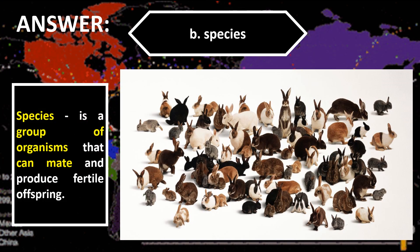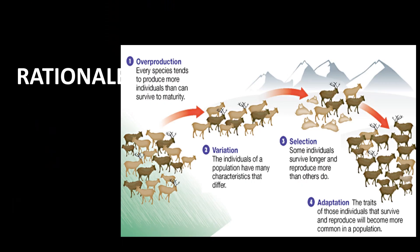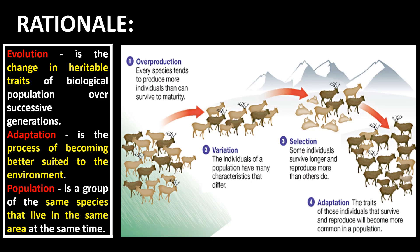The correct answer is letter B, Species. Species is a group of organisms that can mate and produce fertile offspring. Adaptation is the process of becoming better suited to the environment. Population is a group of the same species that live in the same area at the same time.